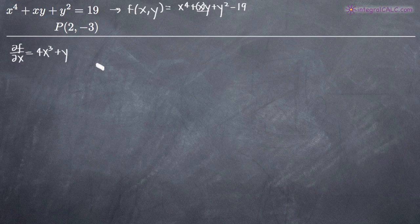Since there's no x variable involved in the terms y squared or negative 19, the derivative of both of those is just zero.